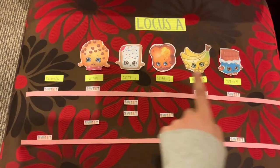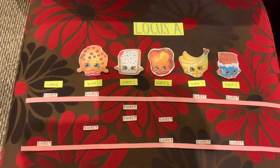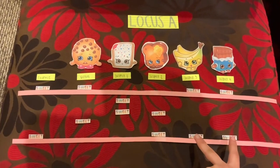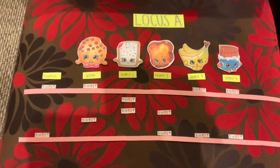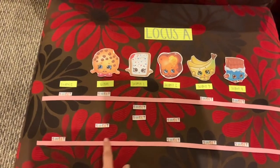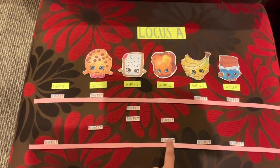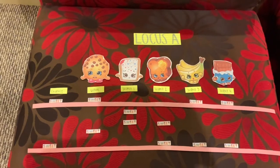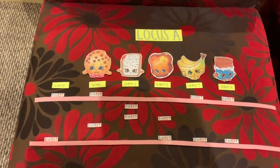If we look across the entire gel, we can see that only two other suspects match exactly. Therefore, the victim, suspect 1, and suspect 2 are excluded from leaving the evidence.